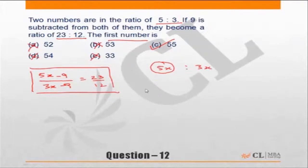If you want to be very sure, you can still check out 55 minus 9. Obviously, one of the numbers is 55. The other number should be 33. So if you subtract 9 from each one of them, 55 minus 9 will become 46 and 33 minus 9 becomes 24. So 46 by 24 is nothing but 23 by 12.